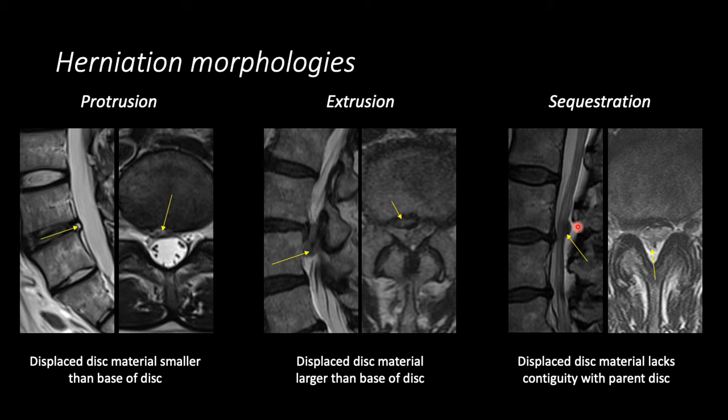This is another example of a subarticular zone disc extrusion. In this case, there is significant superior migration of disc material, and as we page down on the axial image, we can see this disc material within the lateral recess encroaching on the adjacent nerve roots. Here we have a disc extrusion located in the foraminal zone. On the sagittal T2-weighted image at the level of the pedicle, we see a bright ovoid T2-hyperintense structure within the foramen. We can see the nerve root displaced superiorly and compressed against the vertebral body, posterior margin, and pedicle. On the axial image, we can see this foraminal disc extrusion.